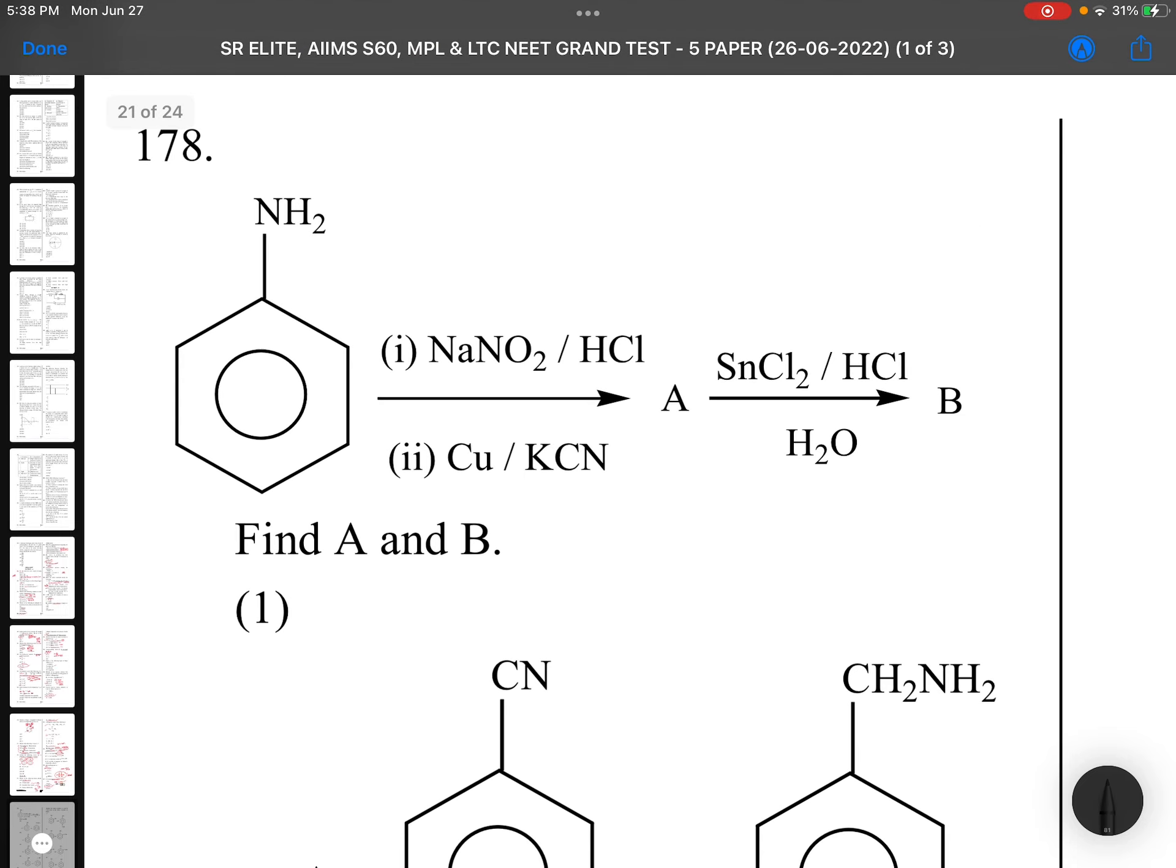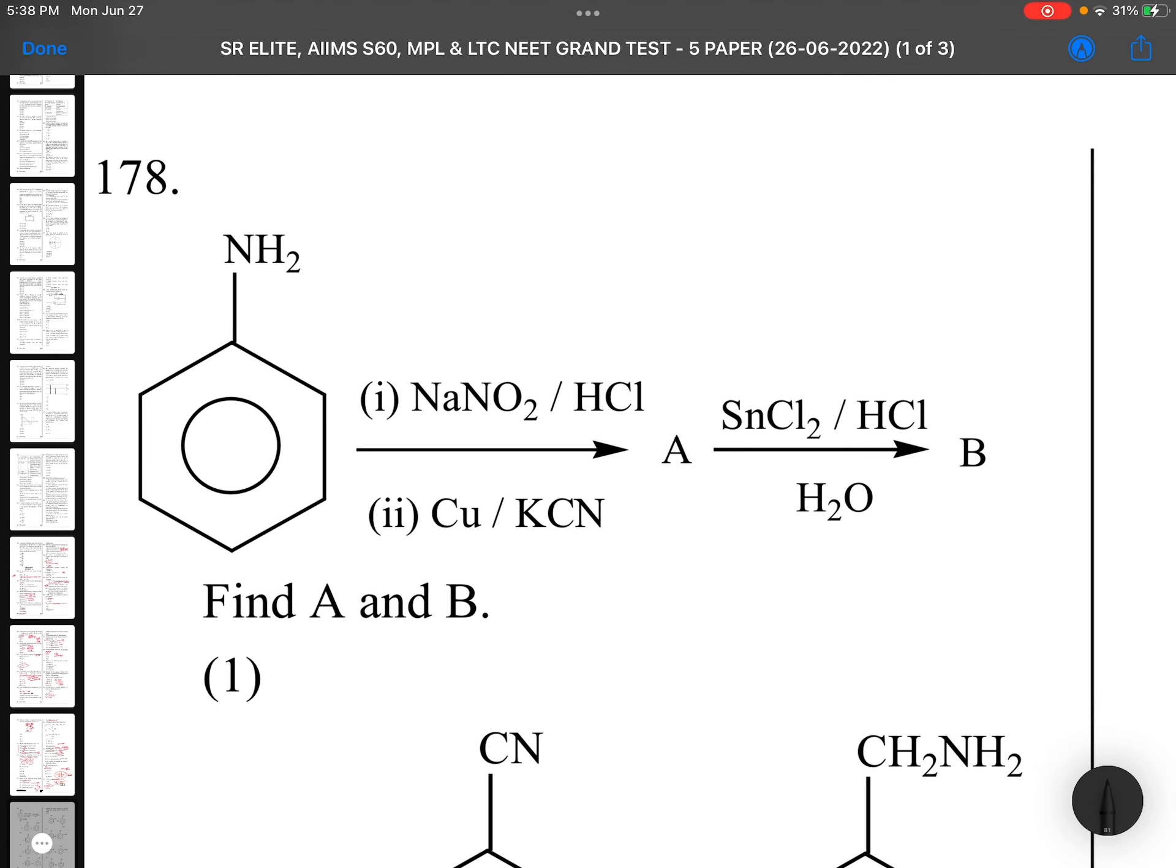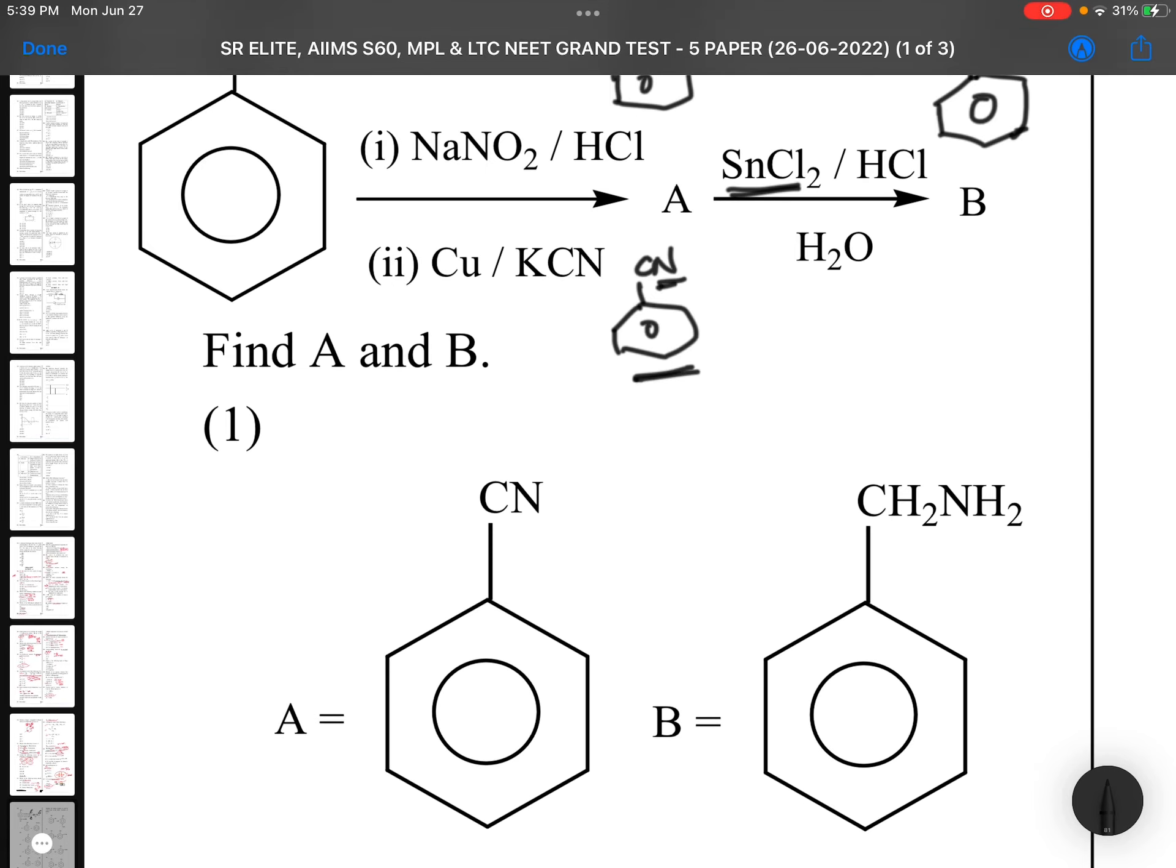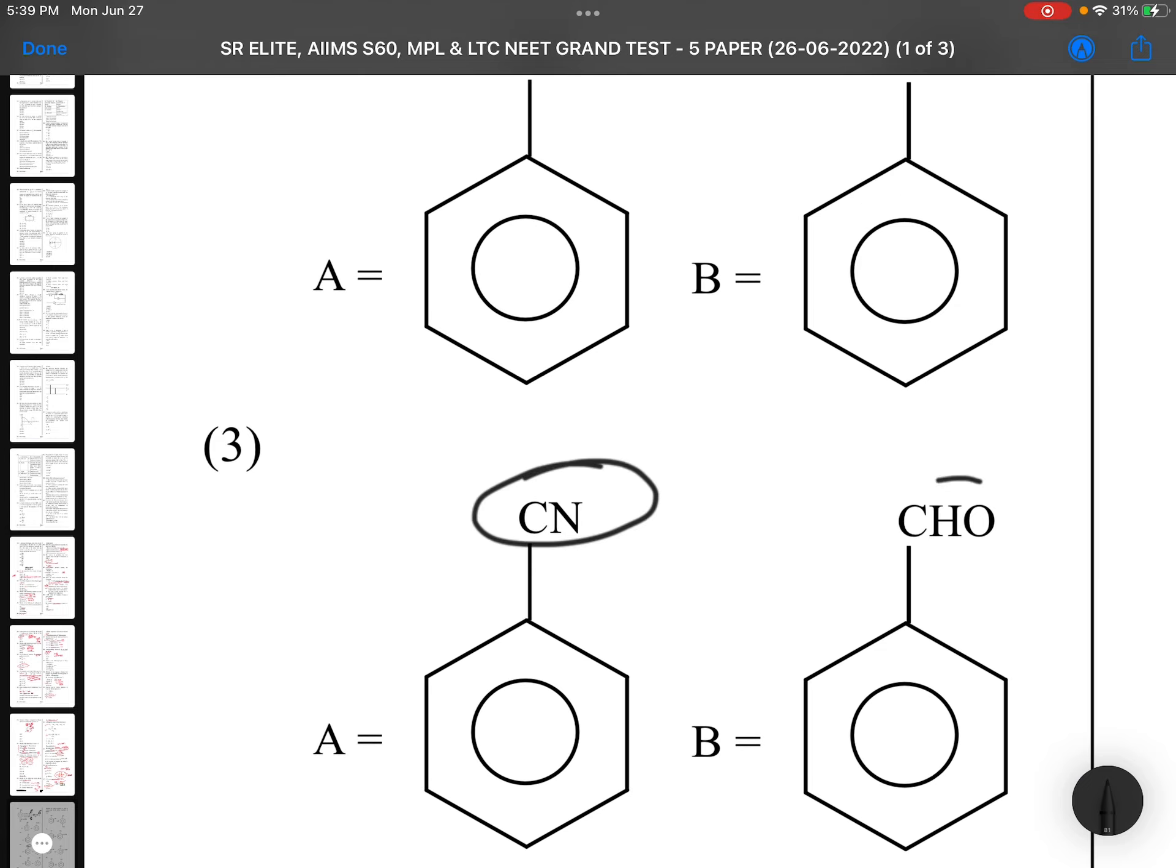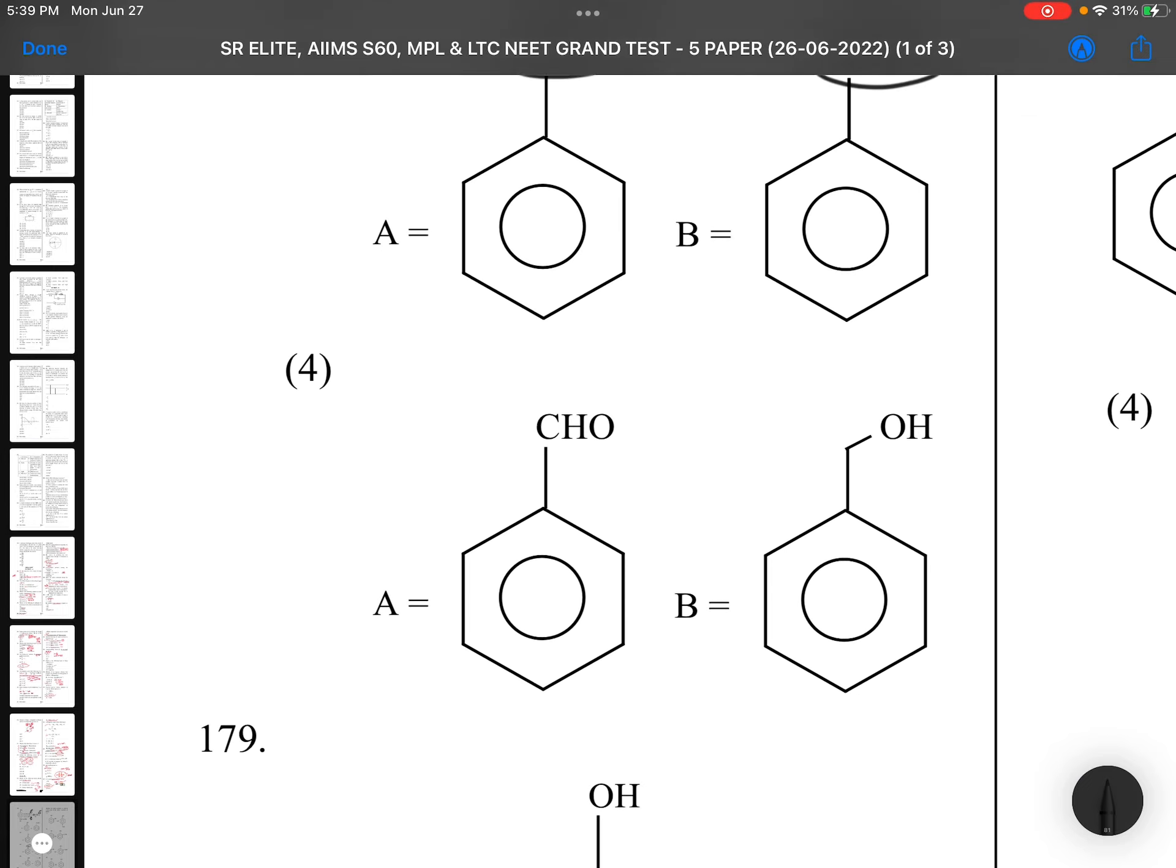Coming to question 178: Aniline with NaNO2, HCl, Cu-CN. After the first step, it becomes benzene diazonium chloride. Very important preparation, don't forget this one. And this gives cyanobenzene. Gatterman reaction, Sandmeyer reactions, remember. And cyanide when treated with SnCl2, this is Stephen reduction. In Stephen reduction, it becomes CHO. So first must be cyanobenzene, second must be aldehyde. Very important conversion this is.